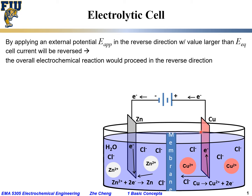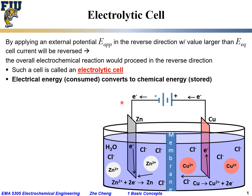The electrons drawn from copper are pumped through the power supply and injected into the zinc electrode — that's why the overall electrochemical reaction proceeds in the reverse direction. Such an electrochemical cell is called an electrolytic cell. In this case, we are spending electrical energy from the external power supply, and that electrical energy is stored as chemical energy in the form of the deposited zinc metal on the zinc electrode.